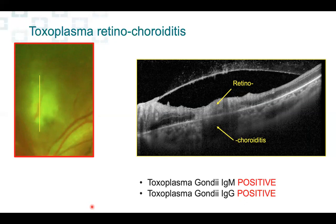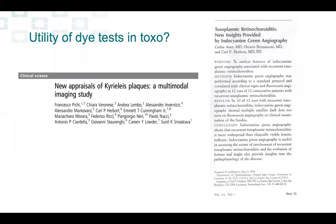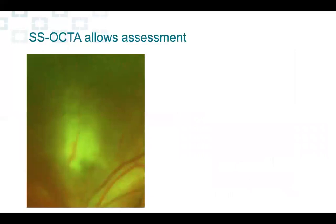When you have this kind of appearance, you always send the patient for IgM and IgG to look for toxoplasmosis, and in this case they came back positive. The diagnosis is retinochoroiditis due to infection from Toxoplasma gondii. The question is: how do we follow this patient? I actually used OCT angiography for the first time in this disease, just to follow the patient.